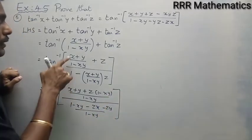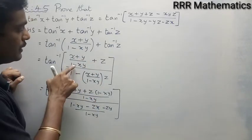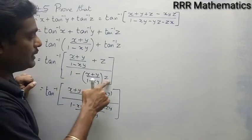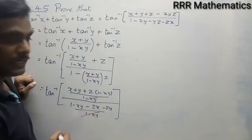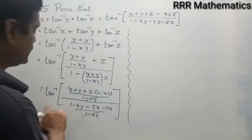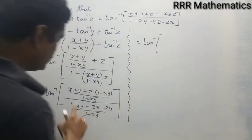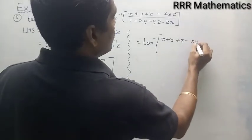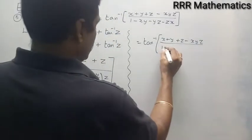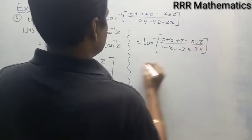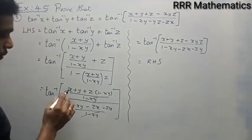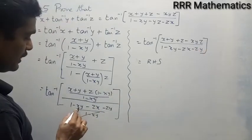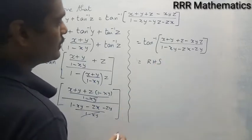After simplification, this equals tan inverse of x plus y plus z minus xyz, all divided by 1 minus xy minus zx minus zy. This is exactly the right-hand side. Expanding: z times 1 gives z, and z times minus xy gives minus xyz, so the numerator is x plus y plus z minus xyz, and the denominator is 1 minus xy minus zx minus zy.